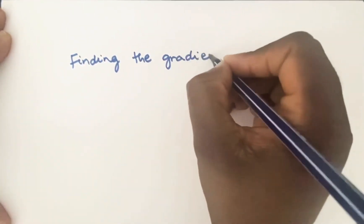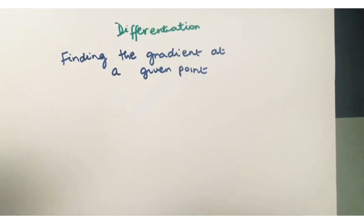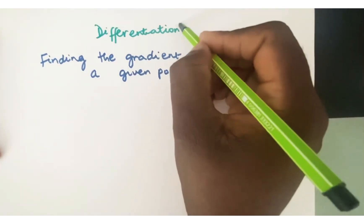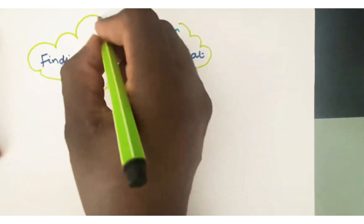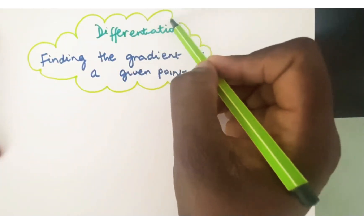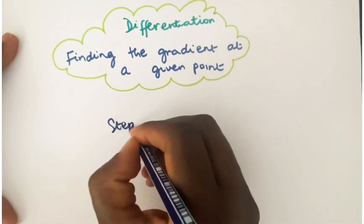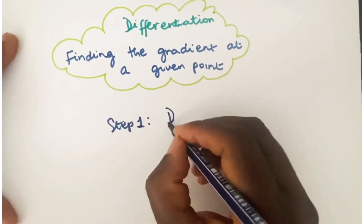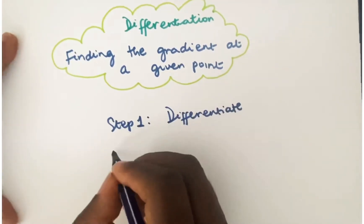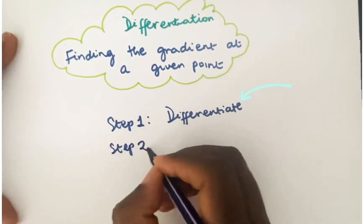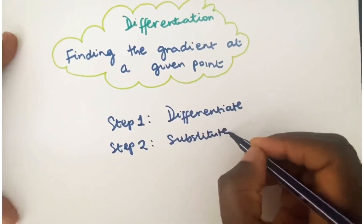Hello and welcome back. In today's lesson, we shall be looking at finding the gradient at a given point. This is a continuation from the last lesson where we were looking at differentiation. In this case, you will be given the equation, the function, and asked to find the gradient at a particular point. There are two steps to solving this type of problem. The first step is to differentiate and the second step is to substitute. So let's have a look at some examples.